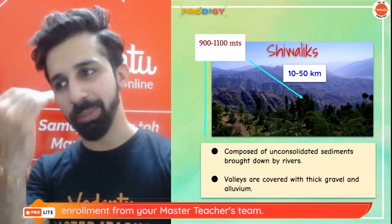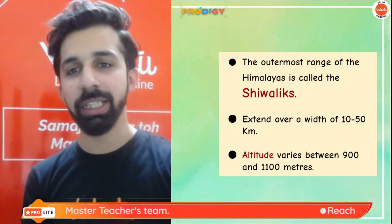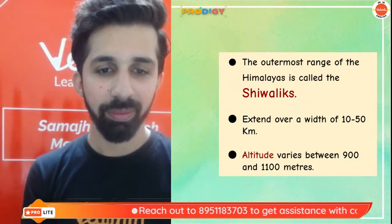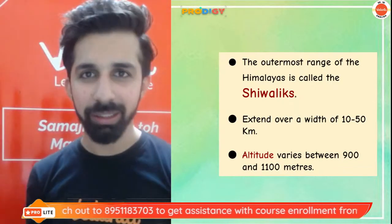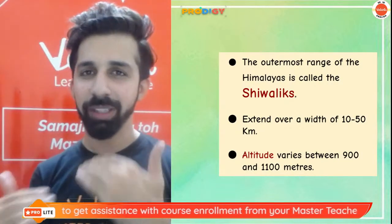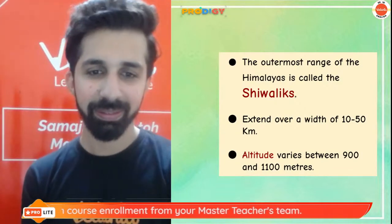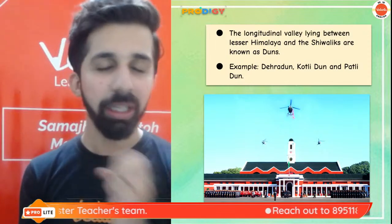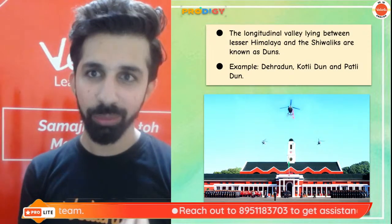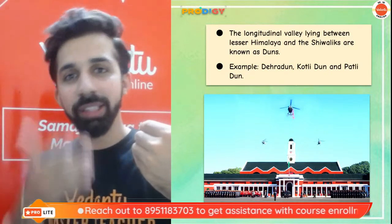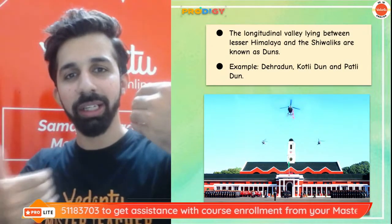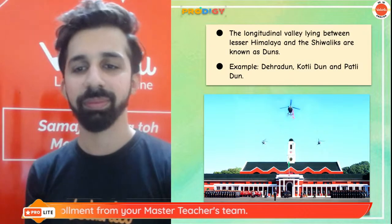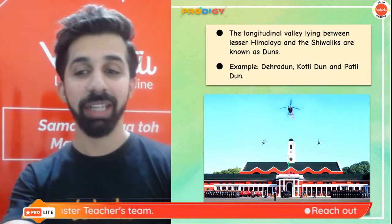Below Himachal we have Shivalik ranges, the outermost range of Himalayas. The width is between 10 to 50 kilometers and the average altitude is between 900 to 1,100 meters. One interesting feature is the longitudinal valleys between lesser Himalayas and Shivalik, known as duns — like Dehra Dun, Kotle Dun, and Patle Dun. The Indian Military Academy is located in Dehra Dun.